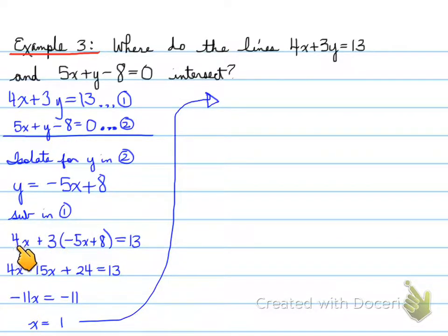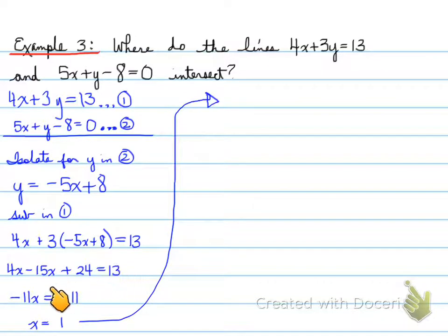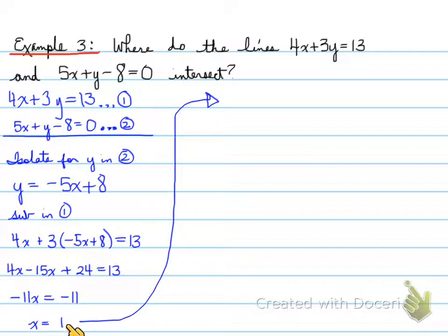We're going to sub this into equation number one. So now we have 4x plus 3y, and y is now negative 5x plus 8, equals 13. We expand this out, collect like terms, and we get negative 11x equals negative 11. That means x is equal to 1.